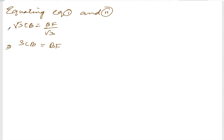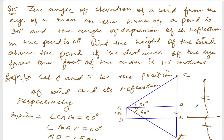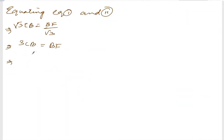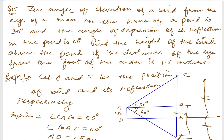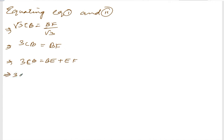Now, BF from B to F will be BE plus EF. So BF equals BE plus EF. Therefore, 3CB equals BE plus EF. We know BE is 1.5 meters, so 3CB equals 1.5 plus EF.